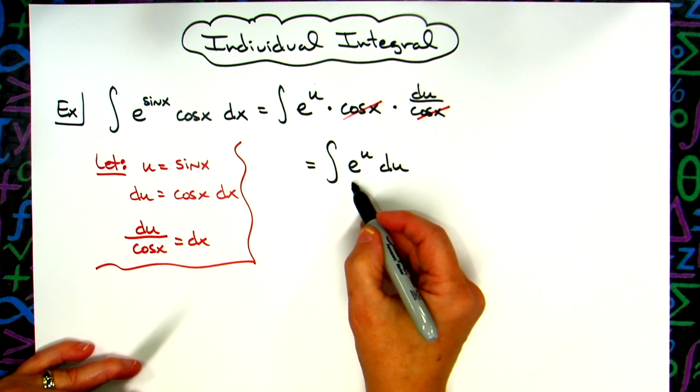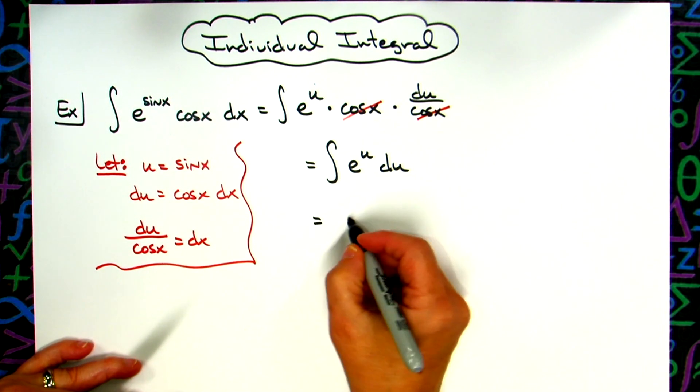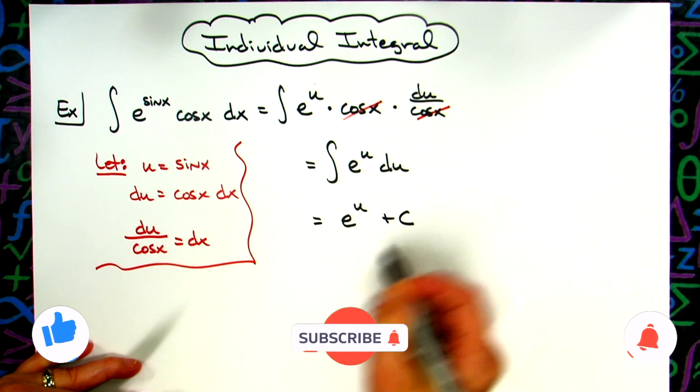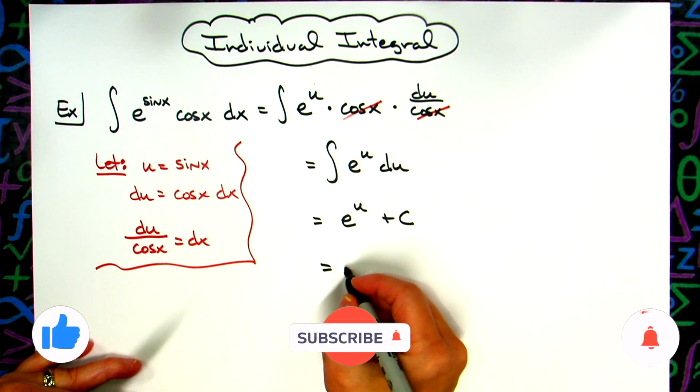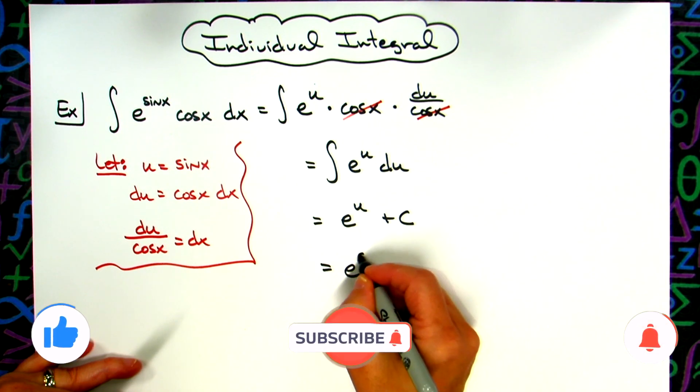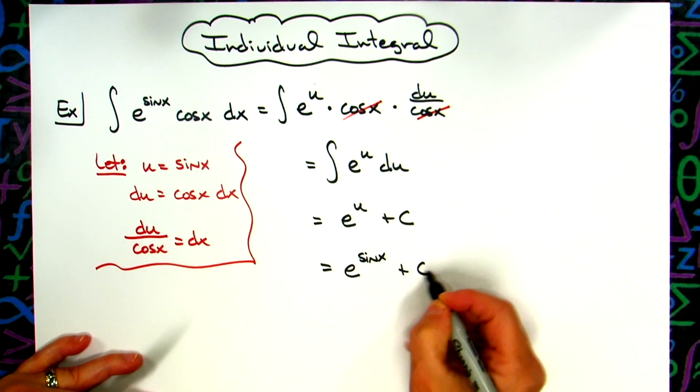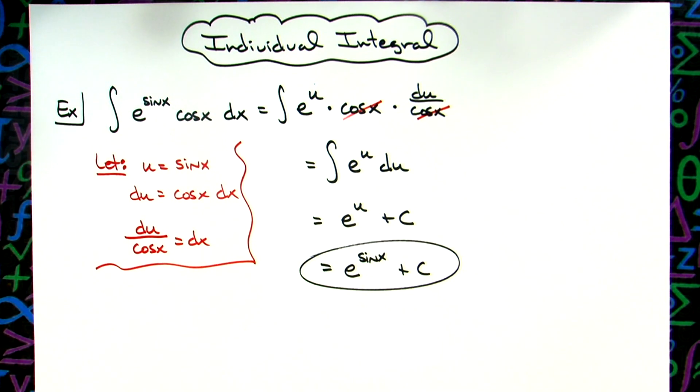We should have that memorized—when you integrate e to the u you get e to the u. So we'll have e to the u plus c. Our last step would be replacing the u with what we said it was originally equal to, so we'll have e raised to the sine x plus c as a final answer.